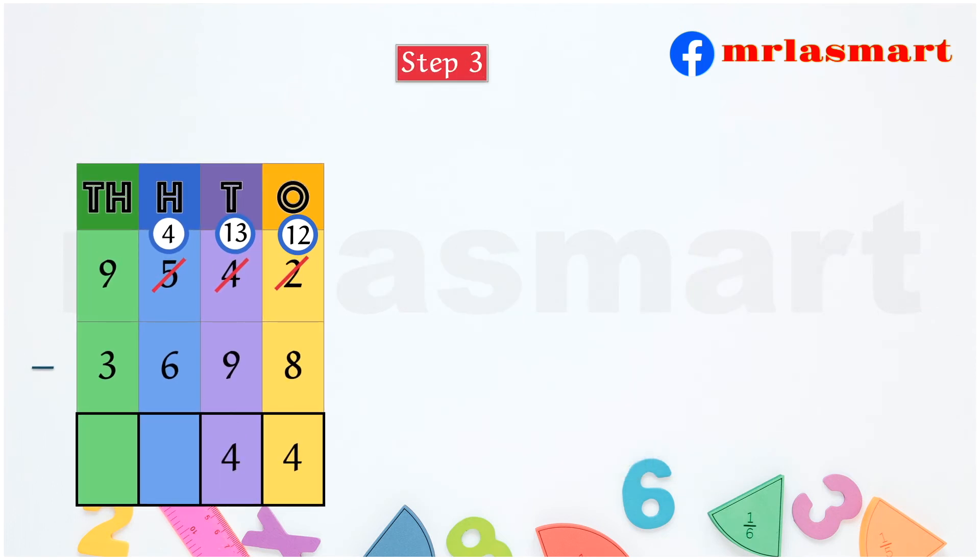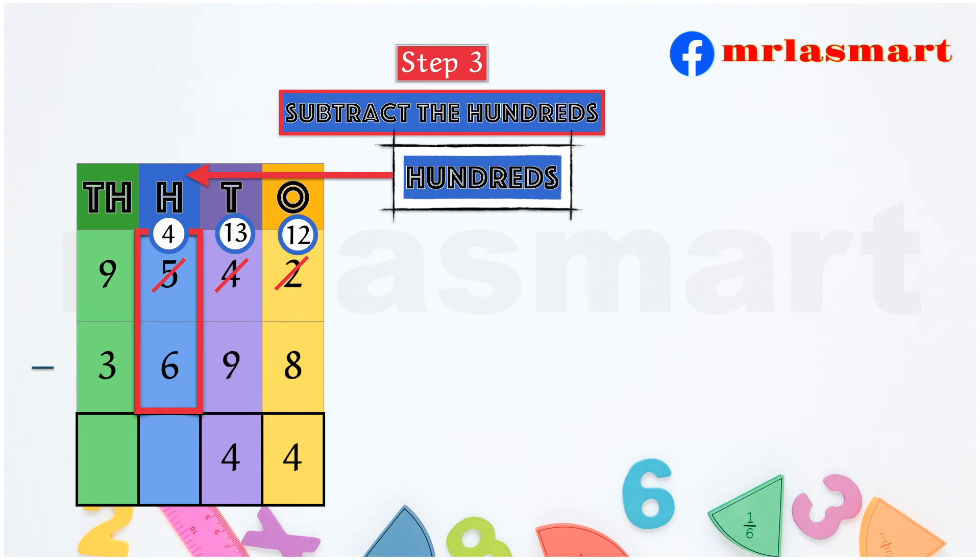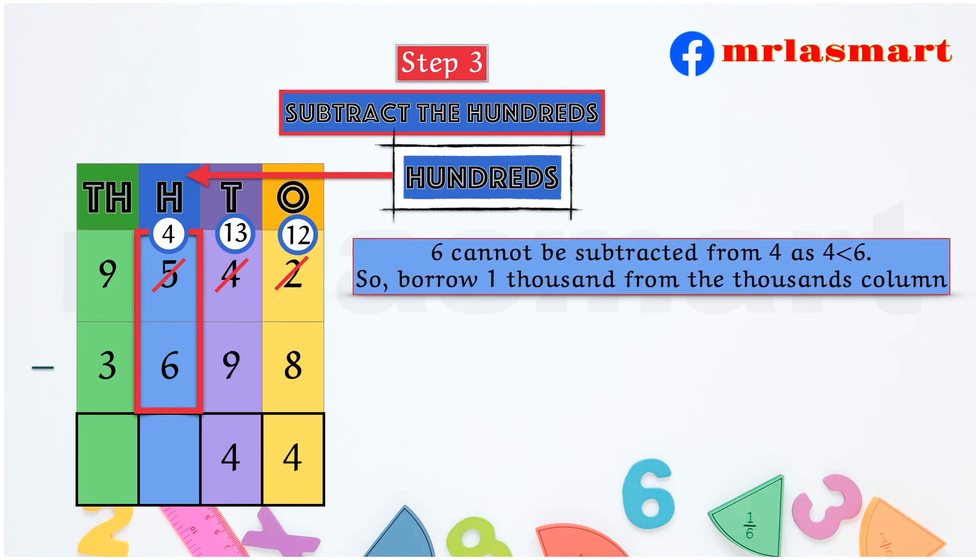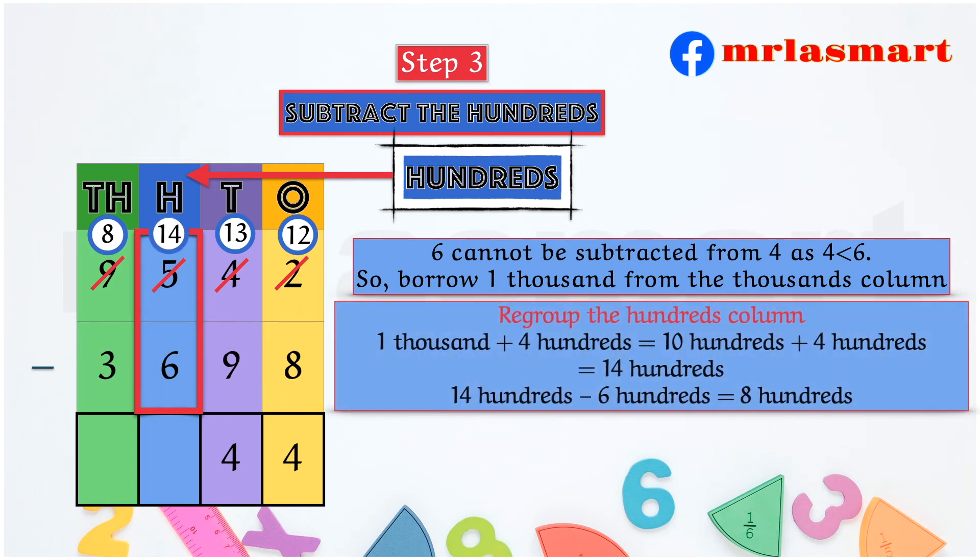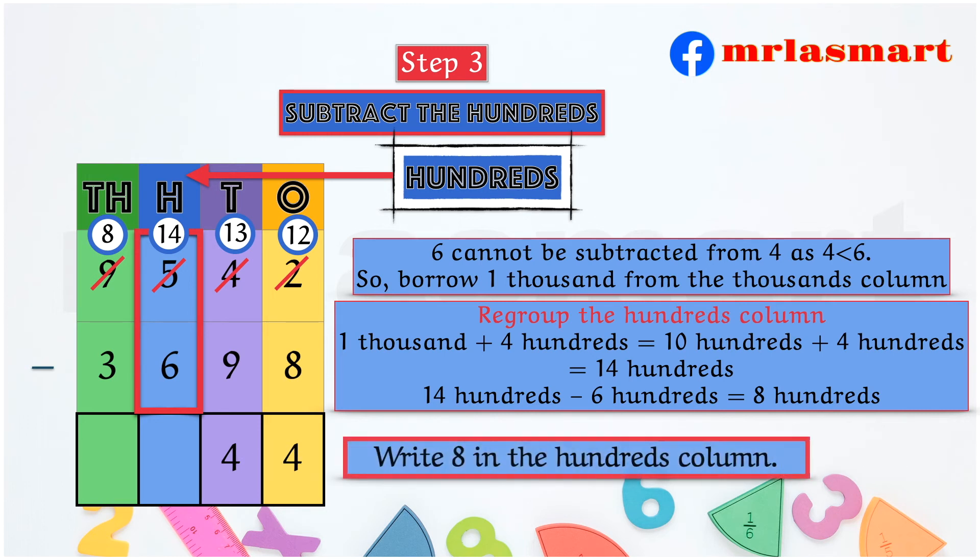Step 3. Subtract the 100s. 6 cannot be subtracted from 4 as 4 is less than 6. So, borrow 1,000 from the 1000s column. Regroup the 100s column. 1,000 plus 4 hundreds equals 10 hundreds plus 4 hundreds equals 14 hundreds. 14 hundreds minus 6 hundreds equals 8 hundreds. Write 8 in the 100s column.